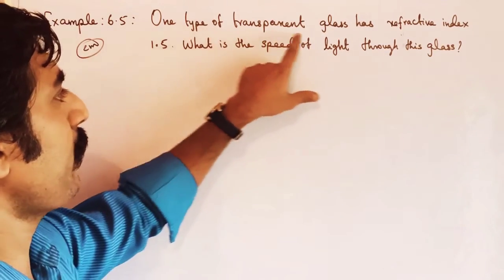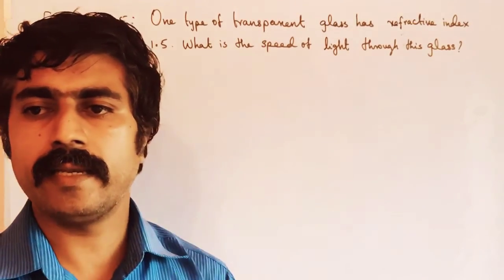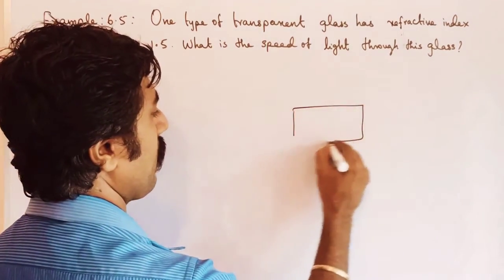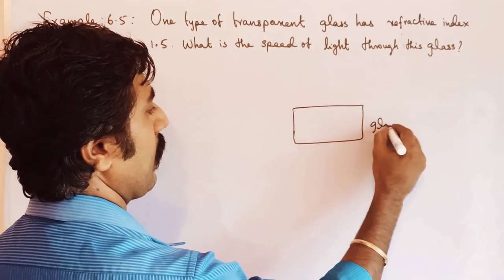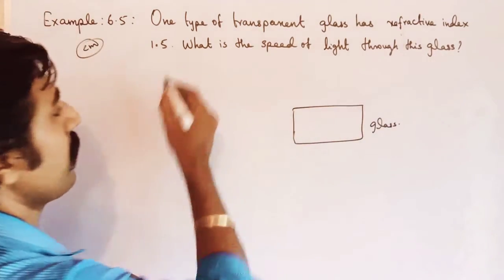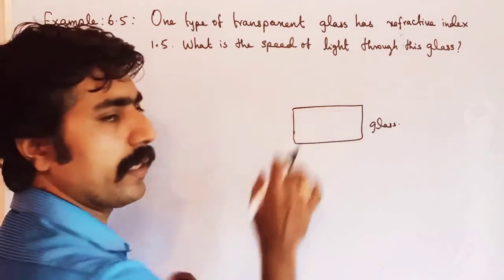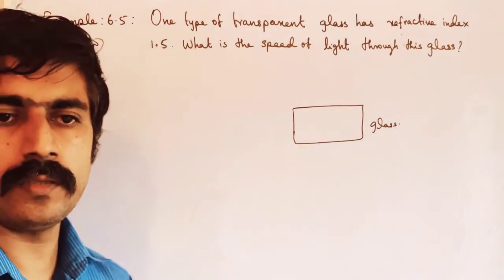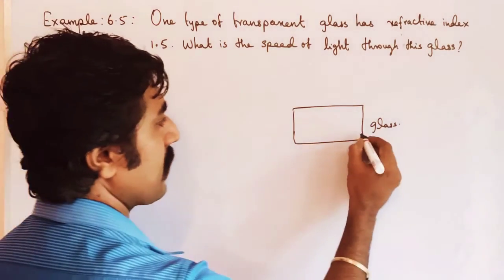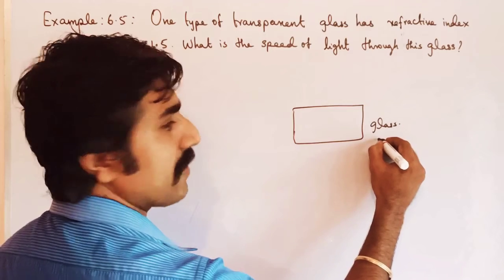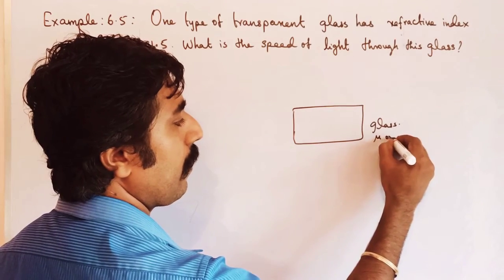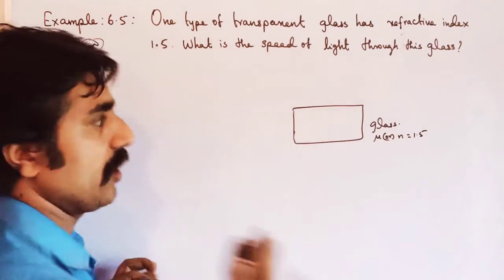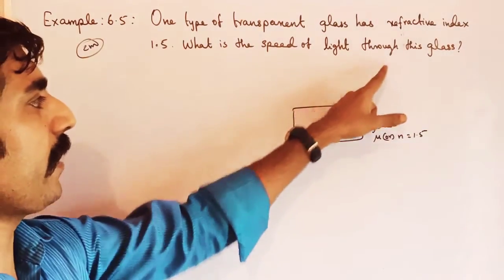One type of transparent glass — transparent glass means light is allowed through the glass. This is the glass piece. It has a refractive index of 1.5. So one material with refractive index — one character. Based on the light, the speed will change. What is the refractive index? The letter mu (μ) is equal to 1.5. What is the speed of light through this glass?